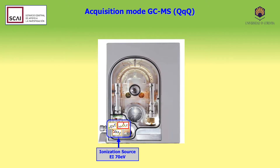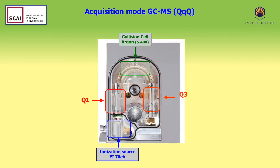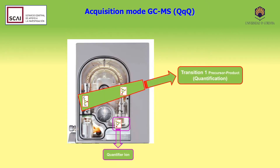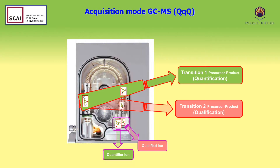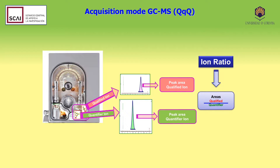Ions are formed at the ionisation source by electronic impact. In the first quadrupole, the precursor ion is filtered, and then broken up into fragments induced by energy generated by ionised argon. In the second quadrupole, or Q3, product ions are filtered and then quantified in the detector. Transition one will produce the quantifying ion, while transition two will produce the qualifying ion. The division between the areas of both peaks is the so-called ion ratio parameter.